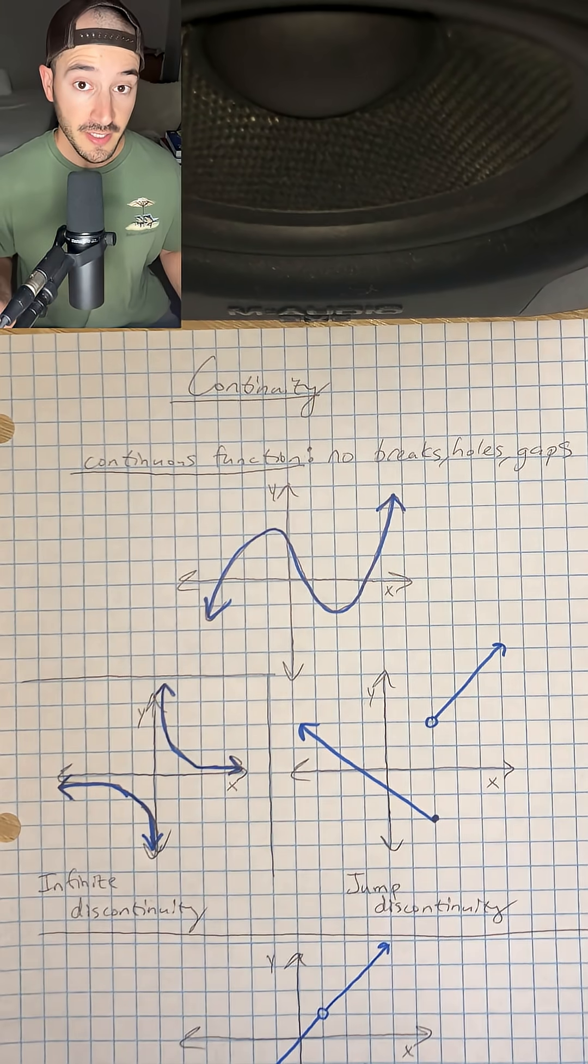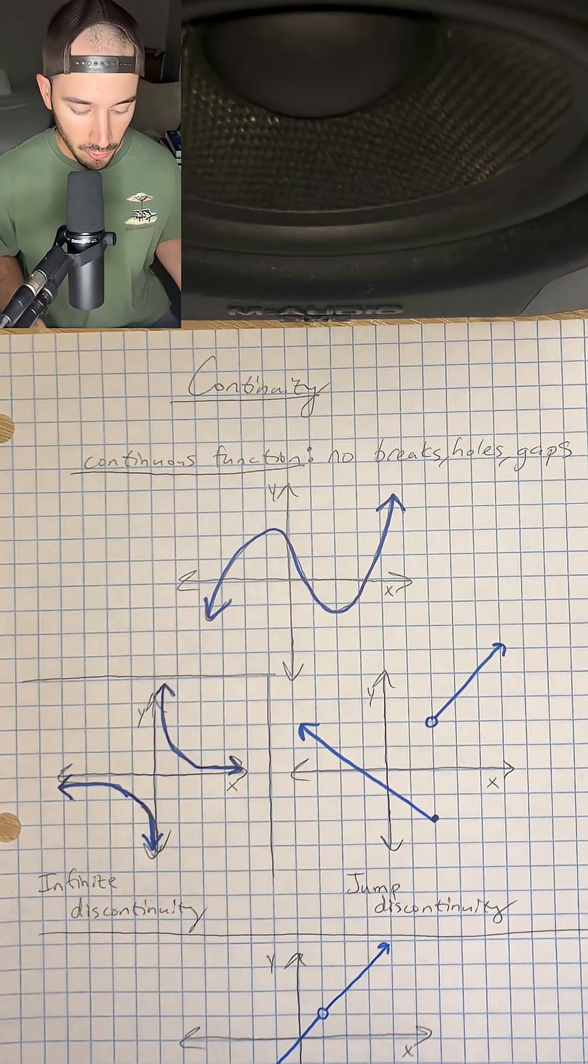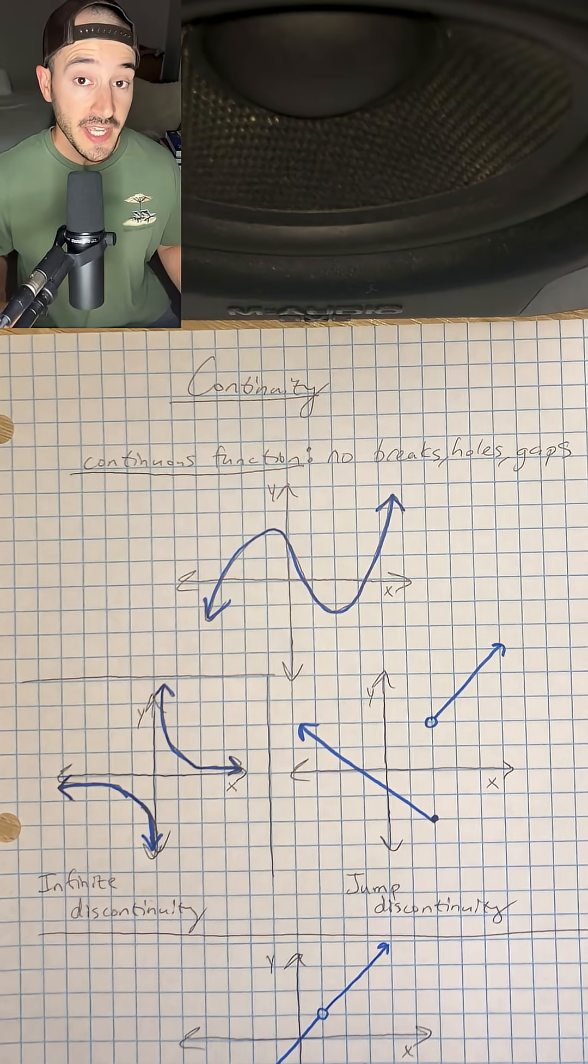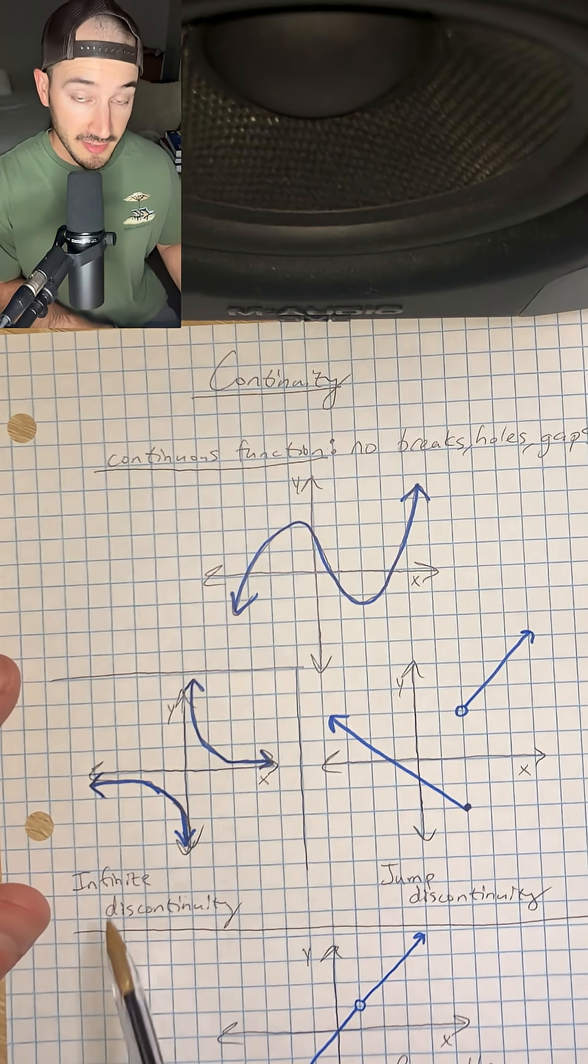Now, on the other hand, we can have a discontinuous function, which is just the opposite, meaning it has some kind of break, hole, or gap. Okay, now we have three types of discontinuity. First, we have infinite discontinuity,